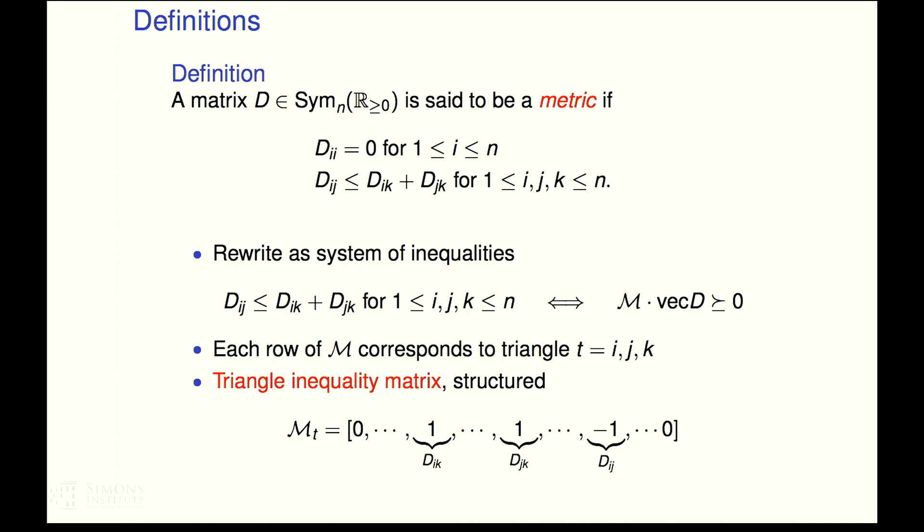I'm going to rewrite the idea of all these distances satisfy a triangle inequality. I'm going to rewrite them as a system of inequalities. And then you can stuff all of the conditions on D into a nice matrix M. And you can vectorize D turn into a great big long vector. And you can rewrite all of these conditions as saying some nice structured matrix M times a vector form of D should be entry wise greater than or equal to zero.